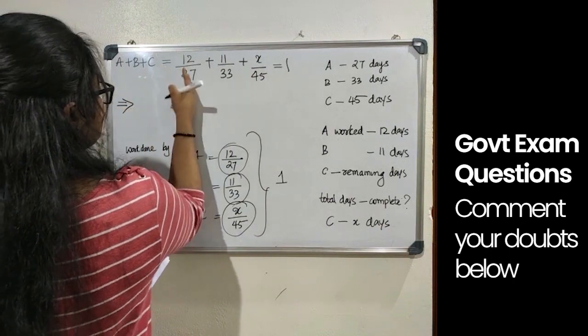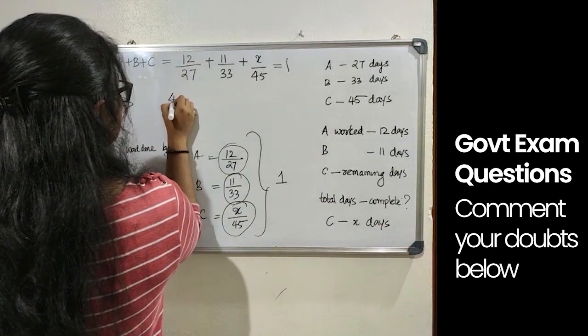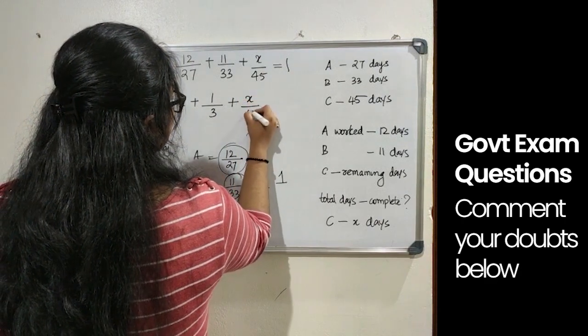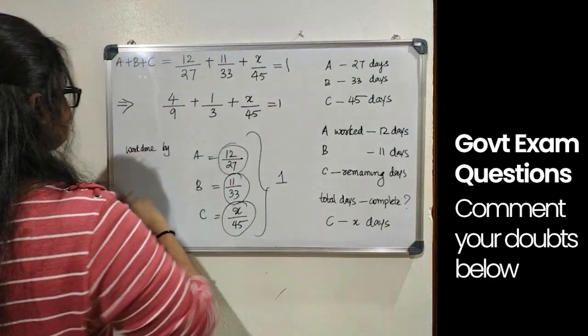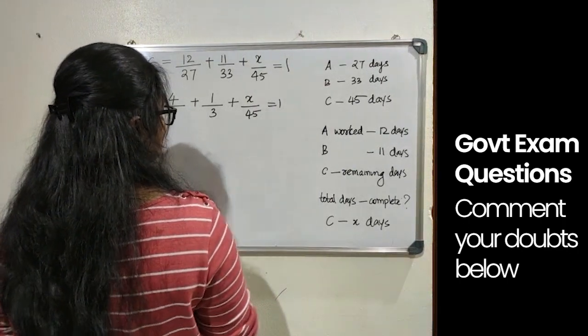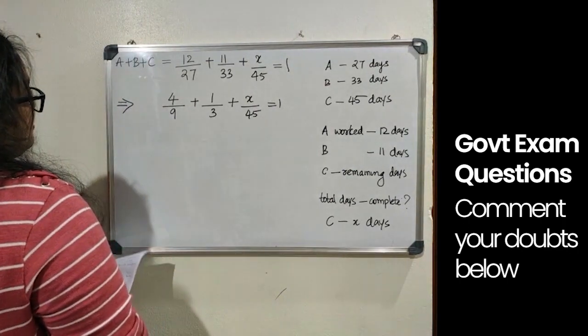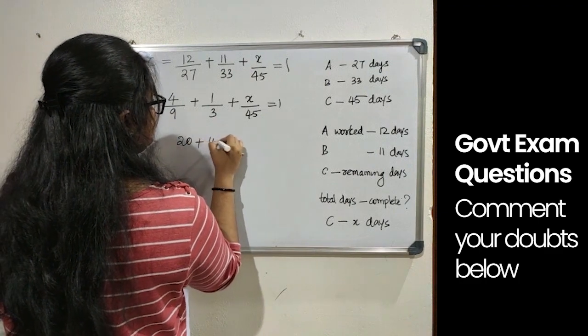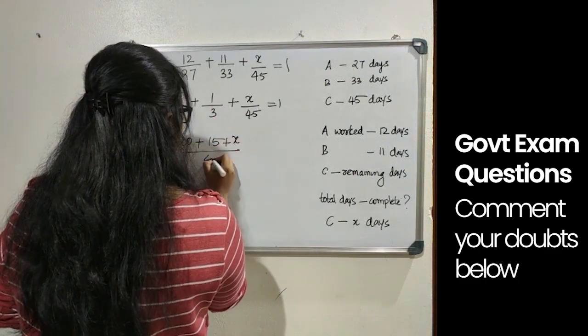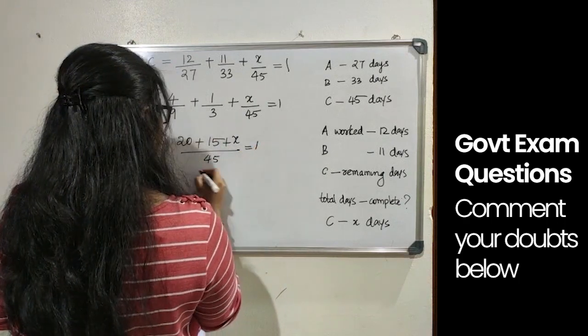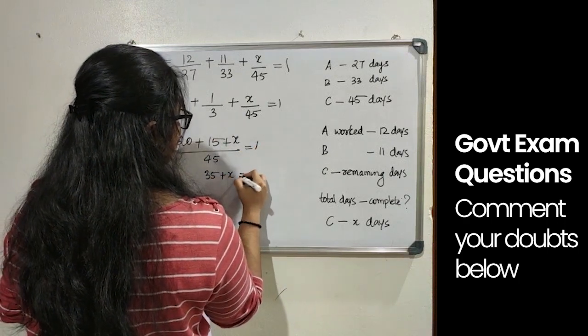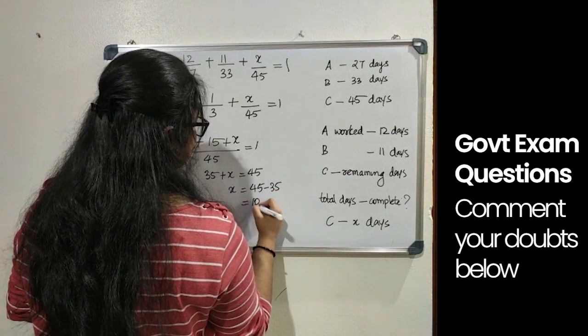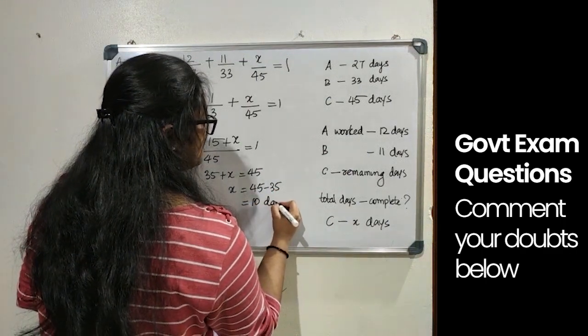Which in lies upon reducing it in the lowest form we get 4 by 9 plus 1 by 3 plus X by 45 equals 1. Making the denominator same we get 20 plus 15 plus x by 45 equals 1.